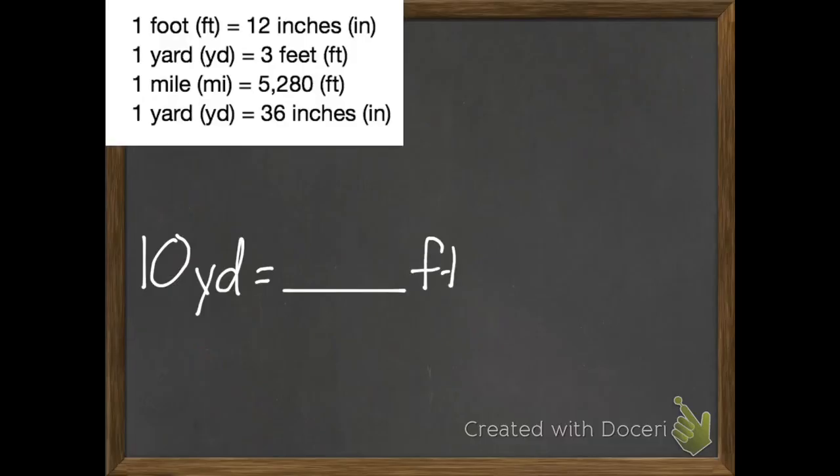And one more example. Actually, let's have you do this one. This one's pretty easy. 10 yards equals how many feet? First of all, we want to figure out which of our basic facts will help us in solving this. Do we have one that has both yards and feet in it? We do. 1 yard equals 3 feet. So every one of those yards is going to have 3 feet. What multiplication problem can you use to help convert? 10 times 3, which equals 30.